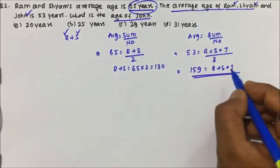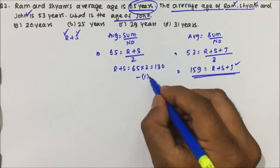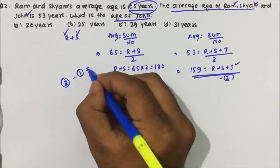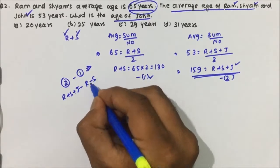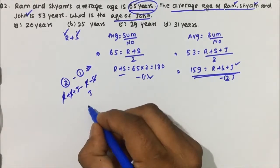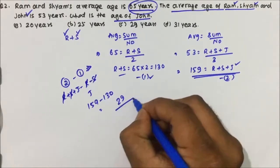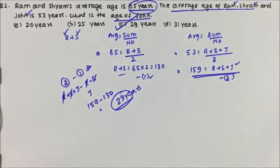We need to find John's age. Ram + Siam + John = 159 (equation 2), and Ram + Siam = 130 (equation 1). Subtracting equation 1 from equation 2: Ram and Siam cancel out, giving John's age = 159 − 130 = 29 years. So John is 29 years old, and option B is the correct answer.